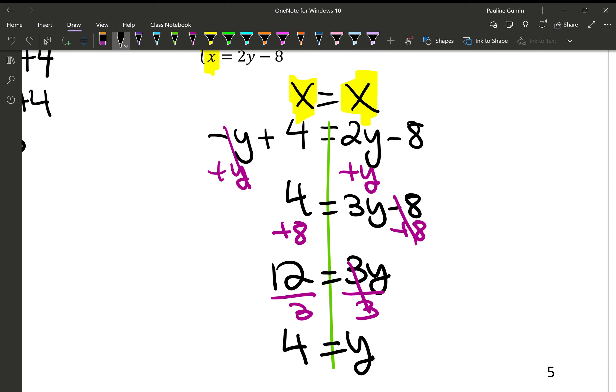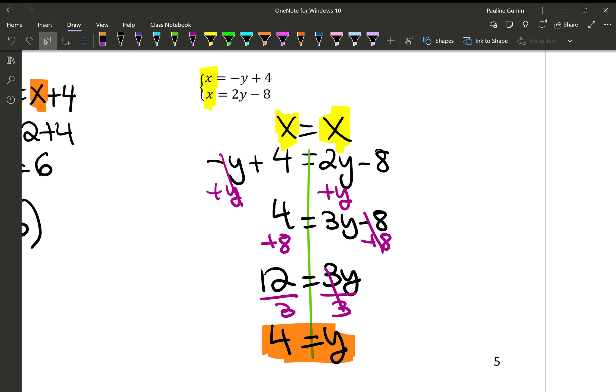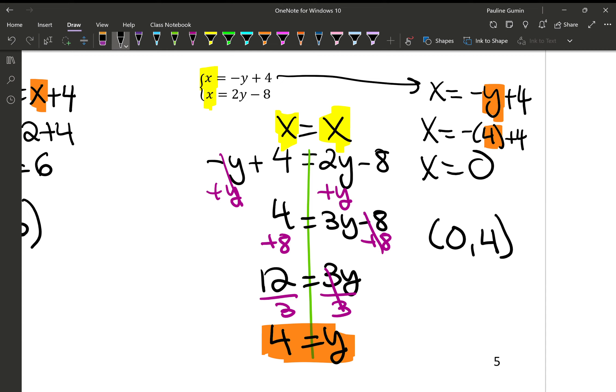So 4 equals y. Great. Because we found y, we can plug in whichever equation we want since they're both x equalses. What do I feel like doing? You know what? The top one looks easier. So I'm going to do that. x equals negative y plus 4. Well, x equals negative 4 plus 4. Well, negative 4 plus 4 is 0. x equals 0. So our answer is 0 comma 4.